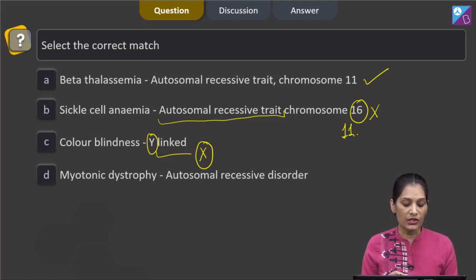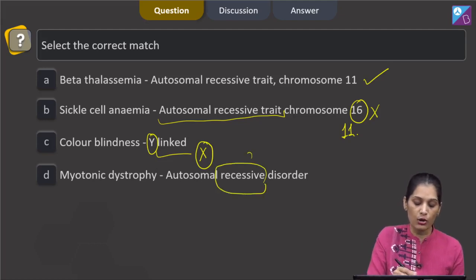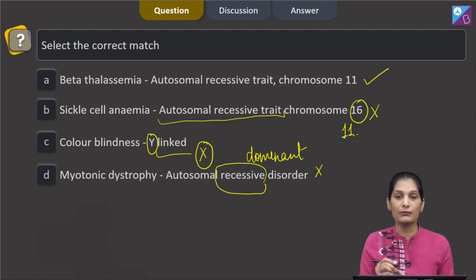D: myotonic dystrophy, autosomal recessive disorder. No, myotonic dystrophy is autosomal dominant disorder. So this is also incorrectly matched.